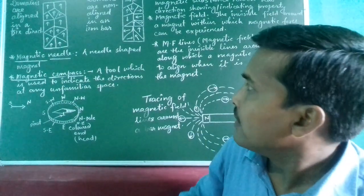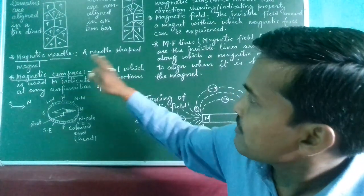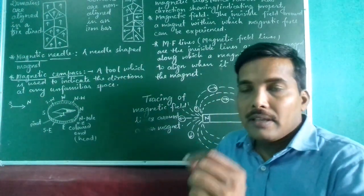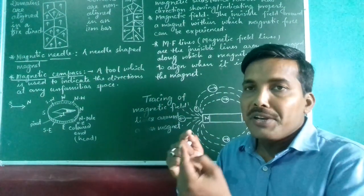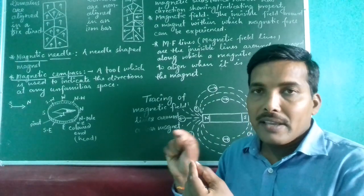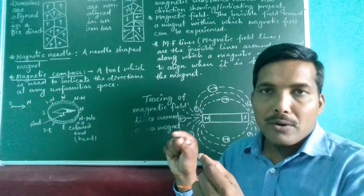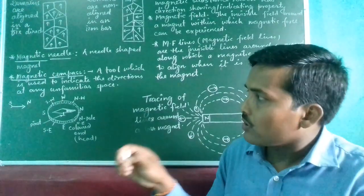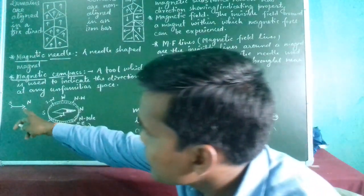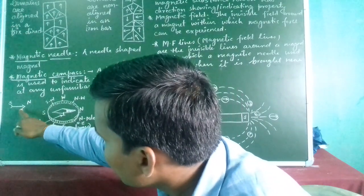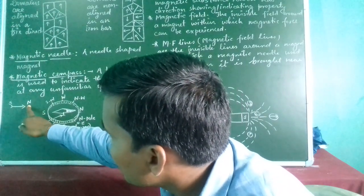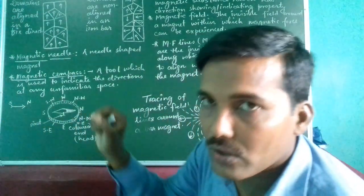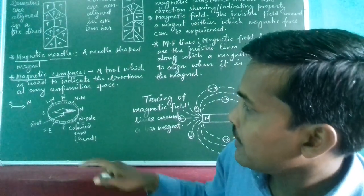Magnetic needle: a needle-shaped magnet. One end is the north pole and the other is the south pole. The arrow end is aligned to the north pole and the tail end is aligned to the south pole.